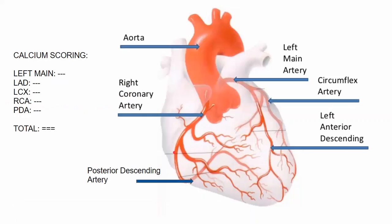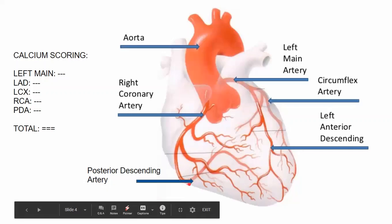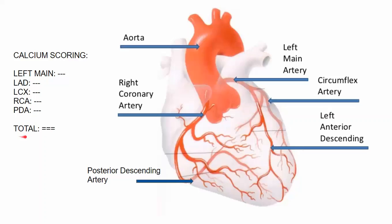As the RCA goes around the back side of the heart, it becomes the posterior descending artery — the PDA that you see on your report. Your total score reflects the total calcium burden of your heart. The CAC score is a composite score of the left main, the left anterior descending, the left circumflex, the right coronary artery, and the posterior descending coronary artery. This total plaque burden is what the prognostic value is derived from on the CAC report.